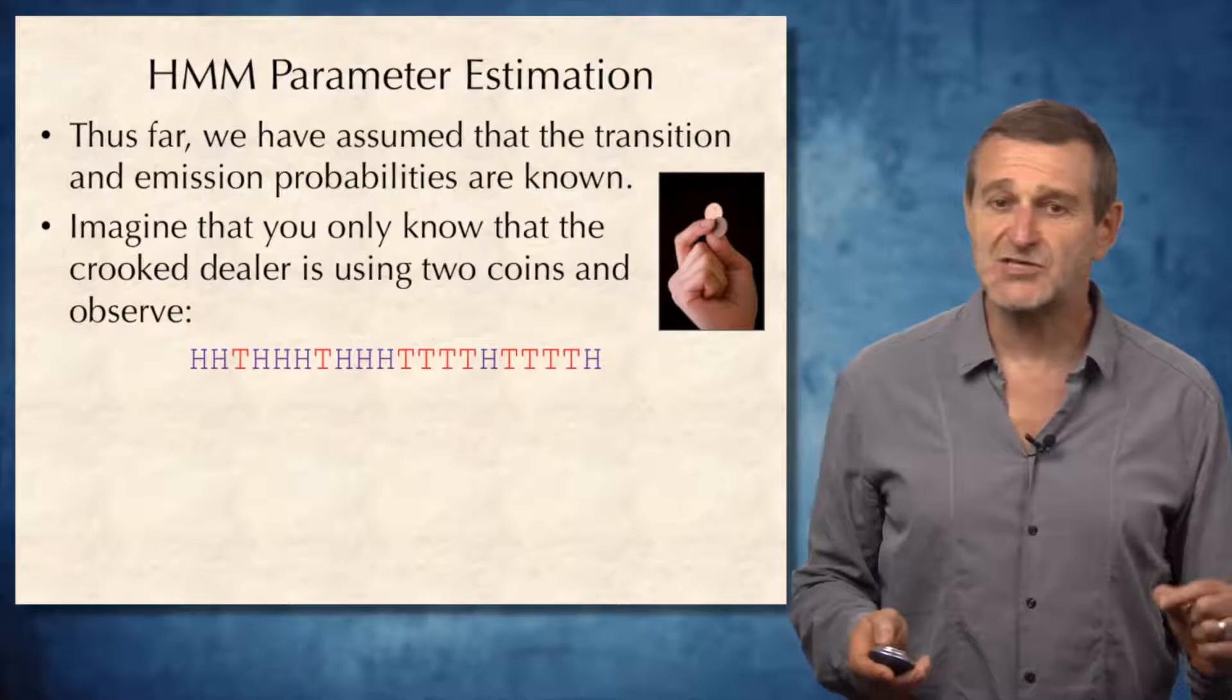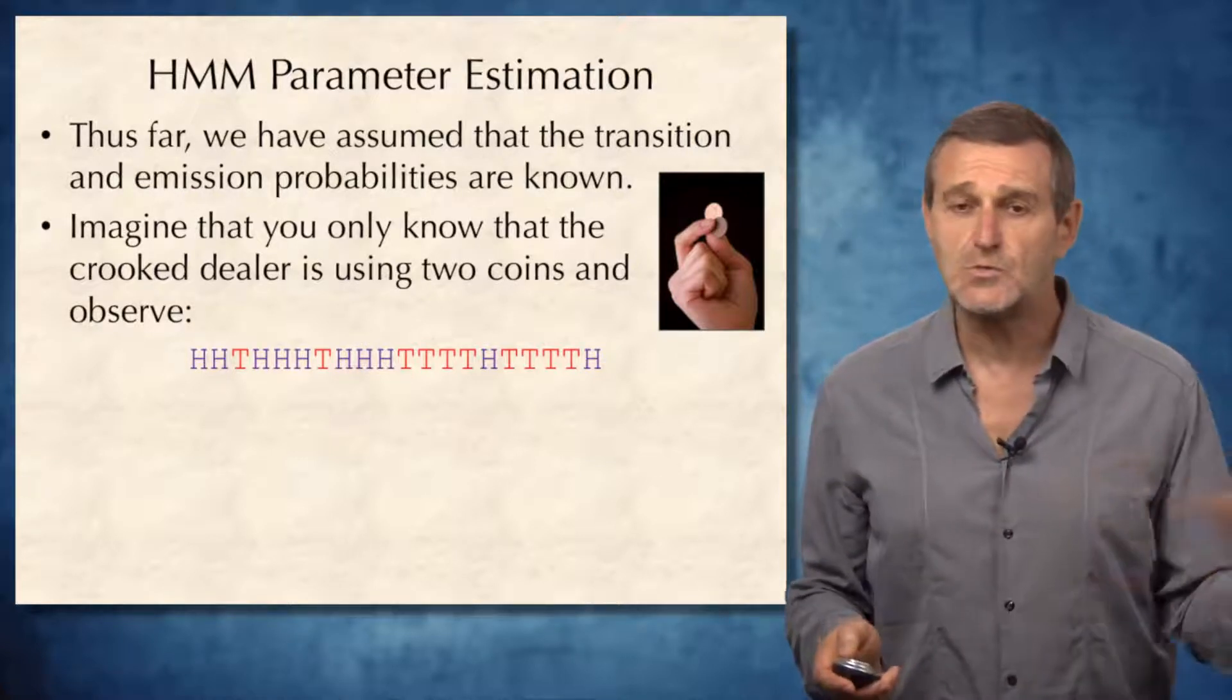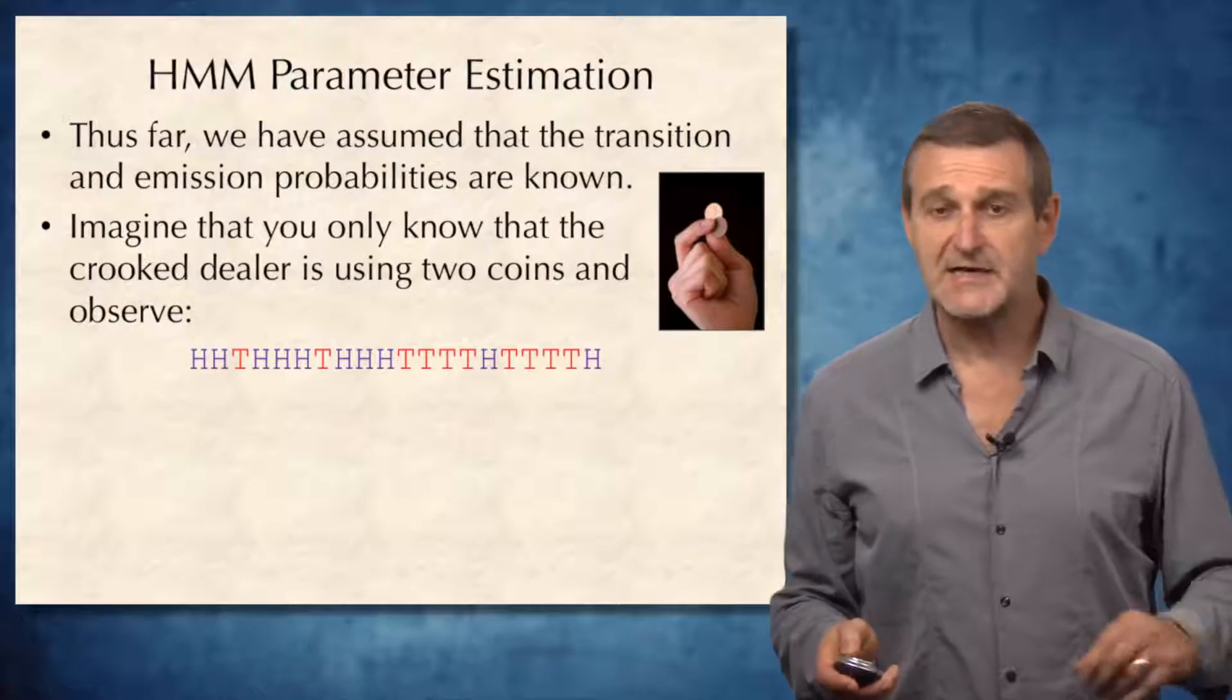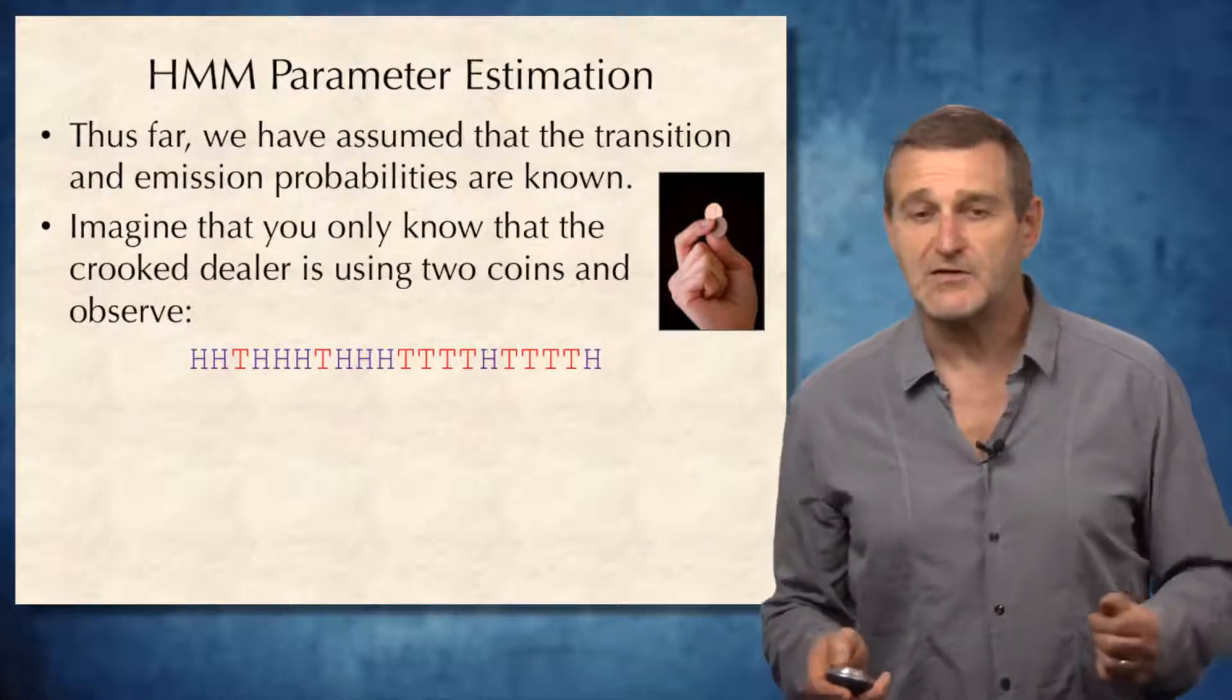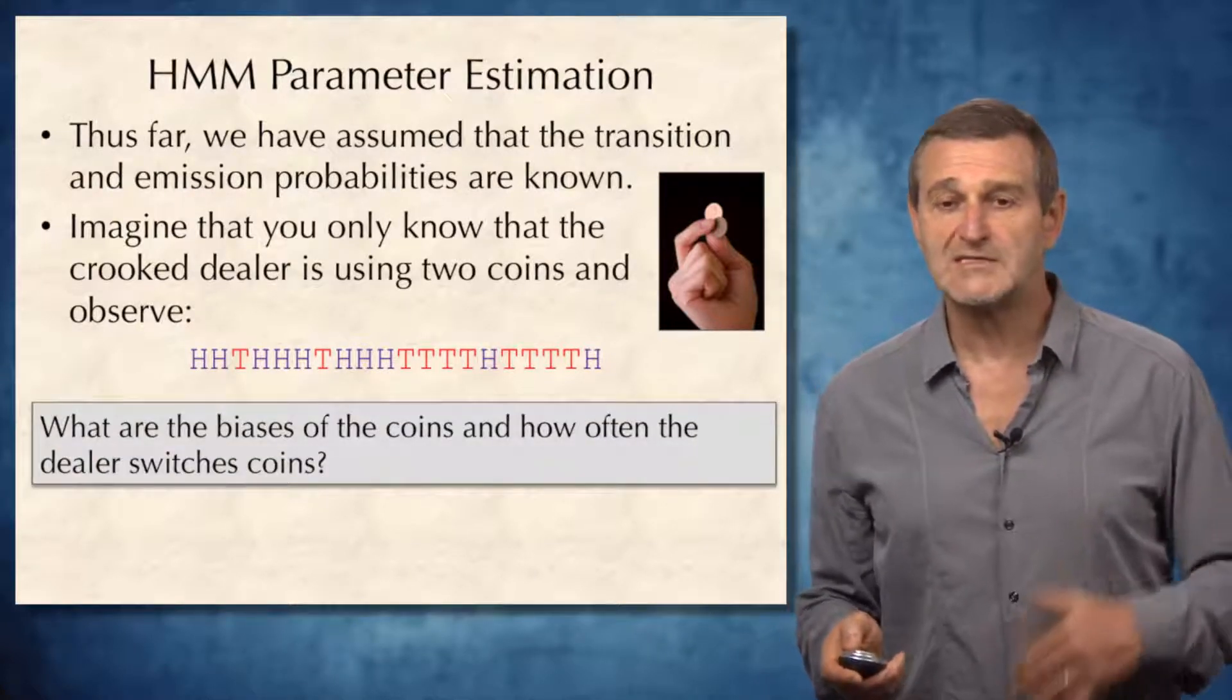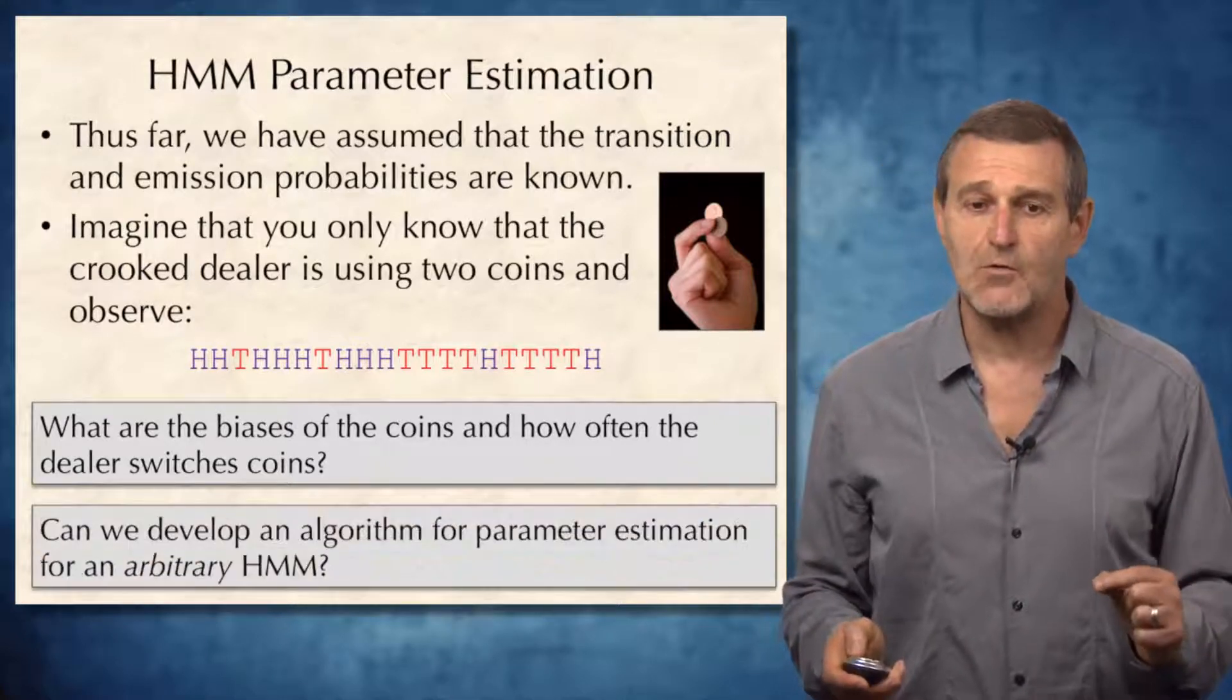However, imagine that you only know that the crooked dealer is using two coins and know nothing else—know nothing about probabilities of biased and fair coins, or probabilities of changing between coins. Suppose you observe the sequence. How can you figure out what are the biases of the coins and how often the dealer changes the coin?